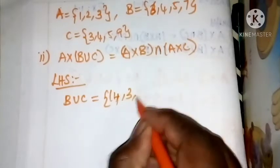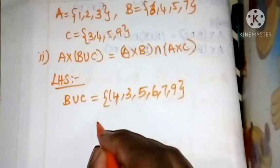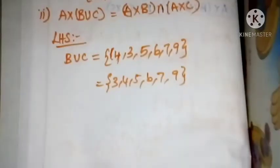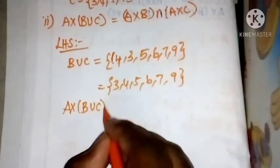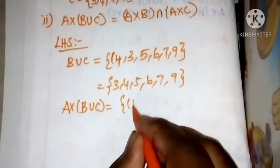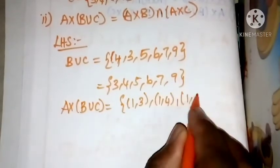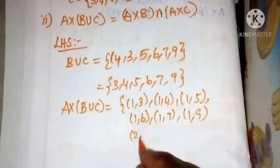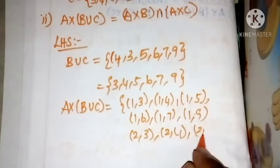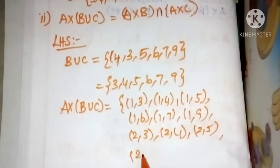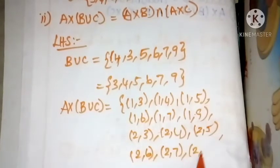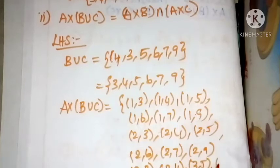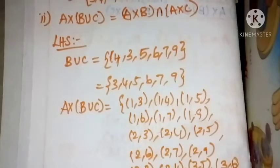Sorry, 4 comma 3 comma 5 comma 6 comma 7 comma 9. 3 comma 4 comma 5 comma 6 comma 9. A cross C: (1,3), (1,4), (1,5), (1,6), (1,7), (1,9), (2,3), (2,4), (2,5), (2,6), (2,7), (2,9), (3,3), (3,4), (3,5), (3,6), (3,7), (3,9).